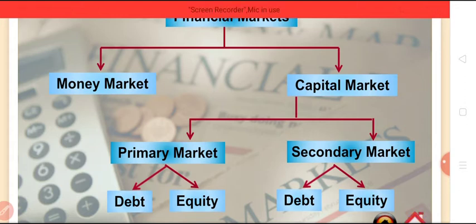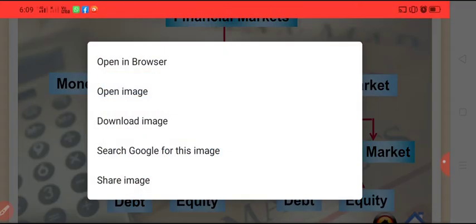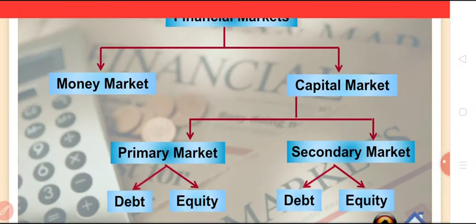Moreover, capital market operates under government rules and regulation. It operates freely but under the guidance of government policies. These markets function within the framework of government rules and regulations. For example, stock exchange works under the regulations of Securities and Exchange Board of India, commonly known as SEBI, which is a government body.